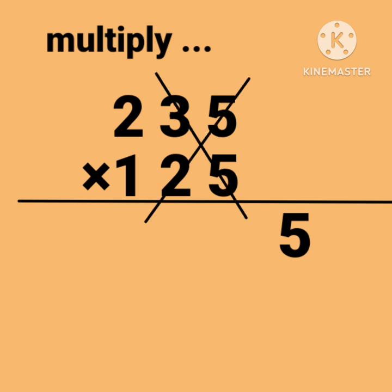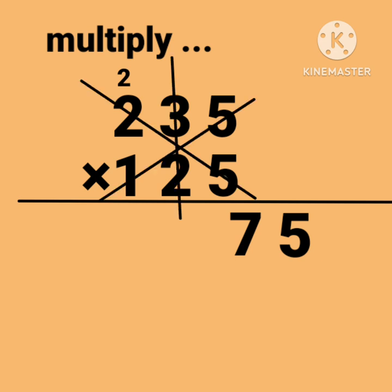5 × 3 plus 5 × 2, and add carry 2. We get 27. Write 27's 7, carry 2. Cross multiply 5 × 1, 5 × 2, 3 × 2, and add carry 2. Total is 23.